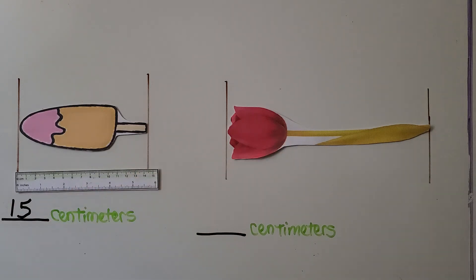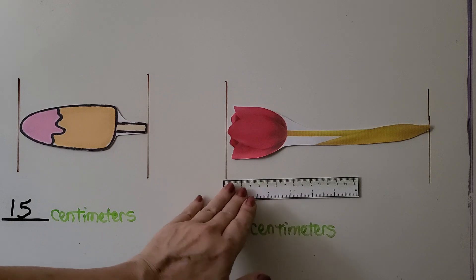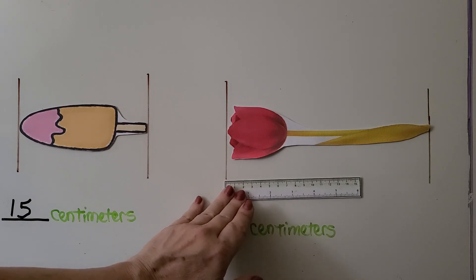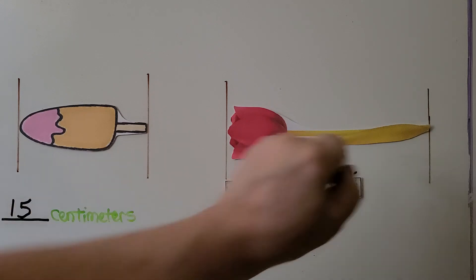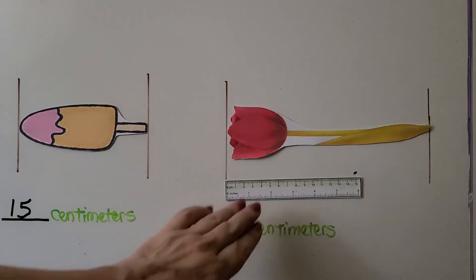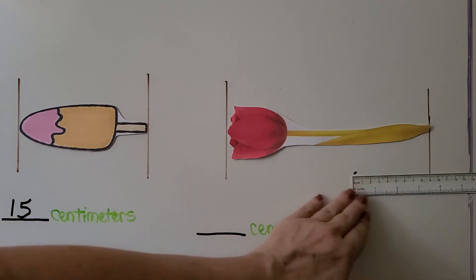For the tulip, we might have to use this ruler more than once, won't we, because it's long. So we line it up to zero, we put a mark where the 15 is, we scoot this over and line up the mark with zero.